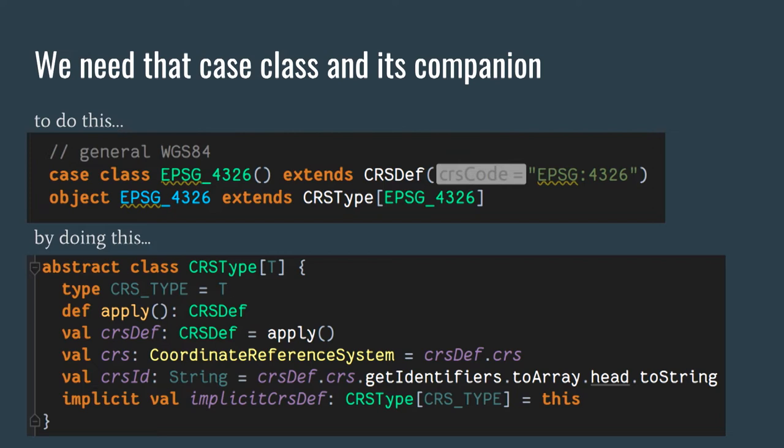A companion object is a place where you can store low-priority implicit definitions. For a given type, the companion object is searched last for implicits. By making this thing have a pointer back to itself marked as implicit, the companion object becomes its own implicit type class. First time I did that I thought I was getting away with something — this is awesome. We've created a definition and its companion object, and these two things are now a type linked together in the system.